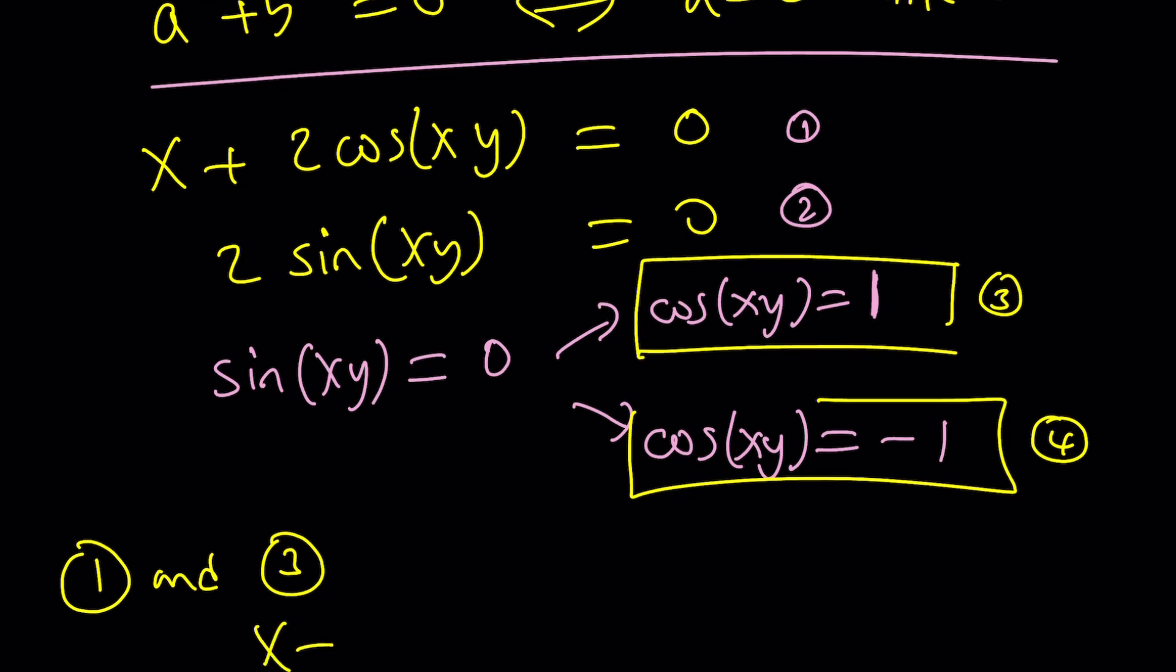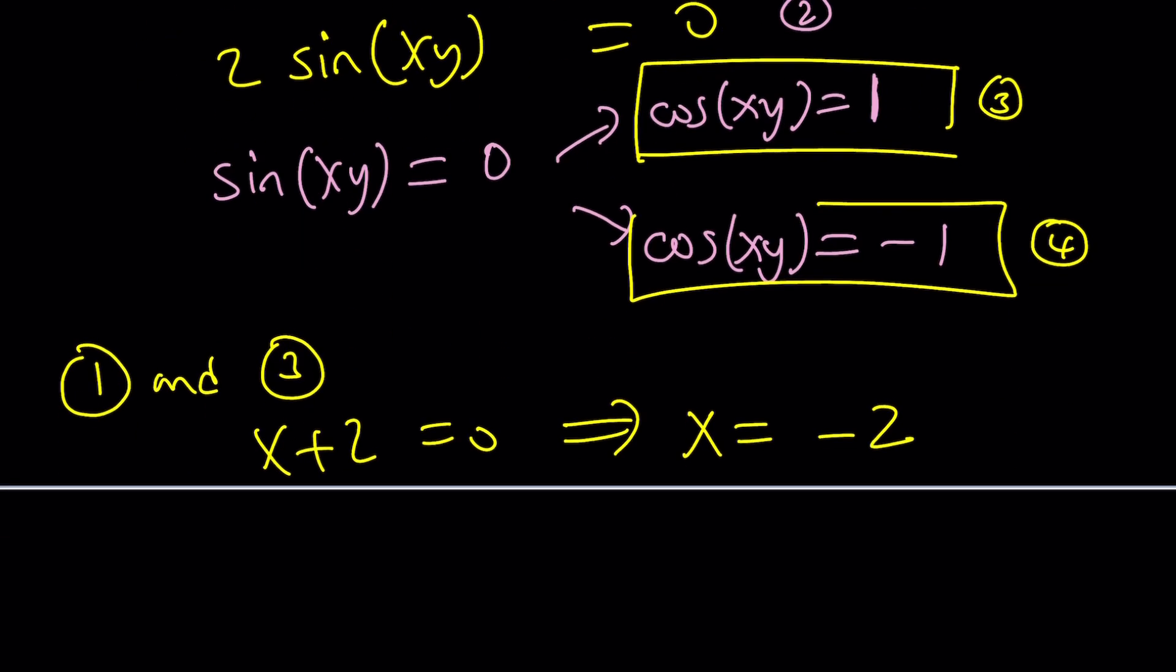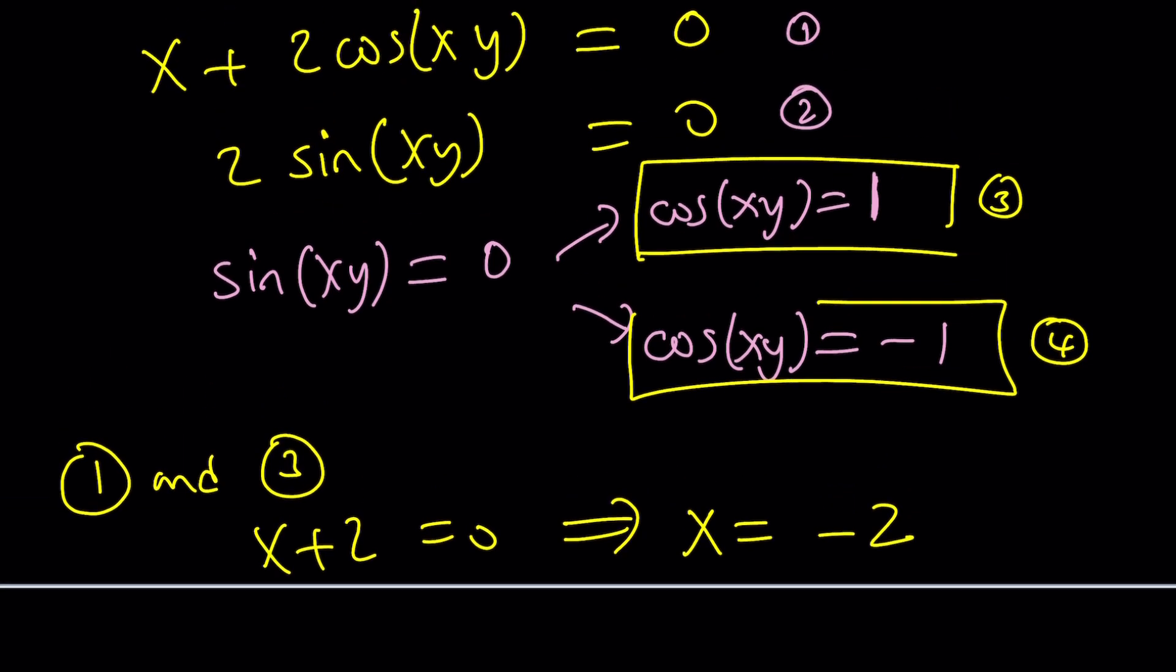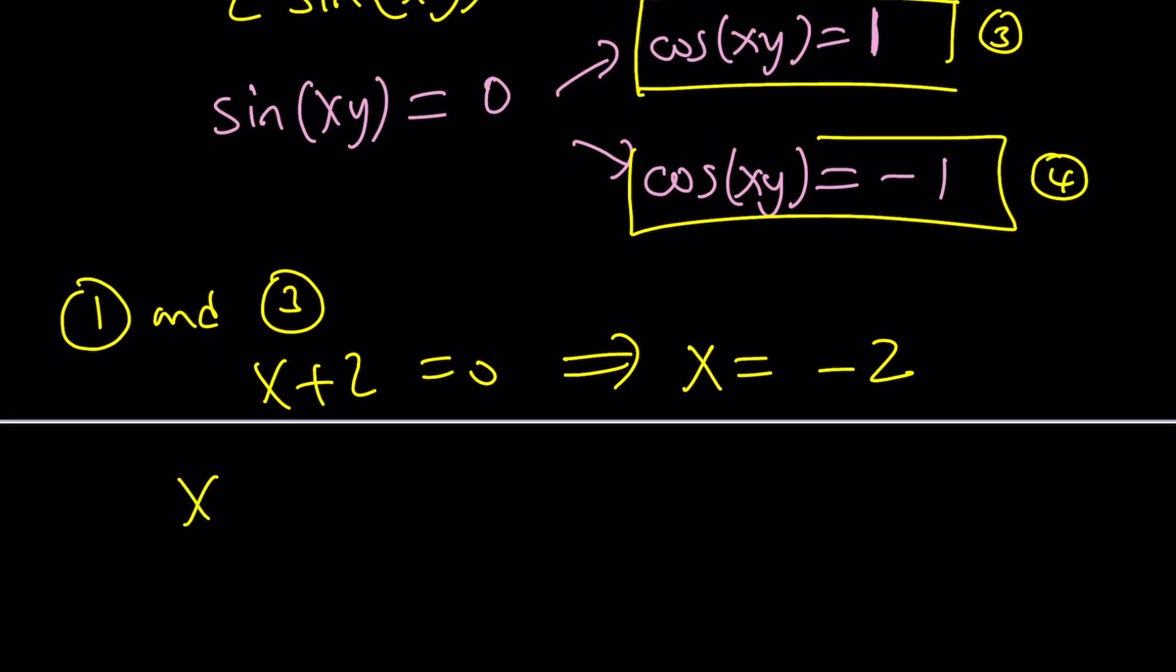That's awesome because this gives us x equals negative 2. And then along with cosine xy is equal to 1. What does that mean? Let's think about it. That means xy is equal to an angle whose cosine is 1. So I'm thinking it could be zero or any multiple of pi.